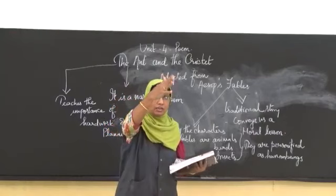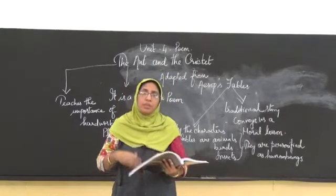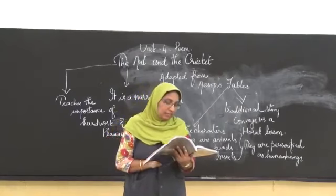Go then, says the ant. The ant gets angry here and it says, go out from here and dance the winter away. How you spend your summer holiday, the same thing you do it during the winter also. You go and dance.